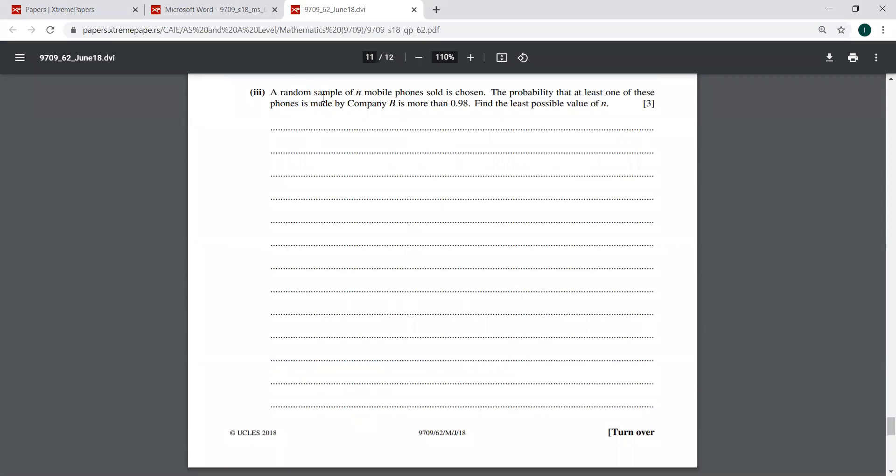It says a random sample of N mobile phones sold is chosen. The probability that at least one of these phones is made by company B is more than...